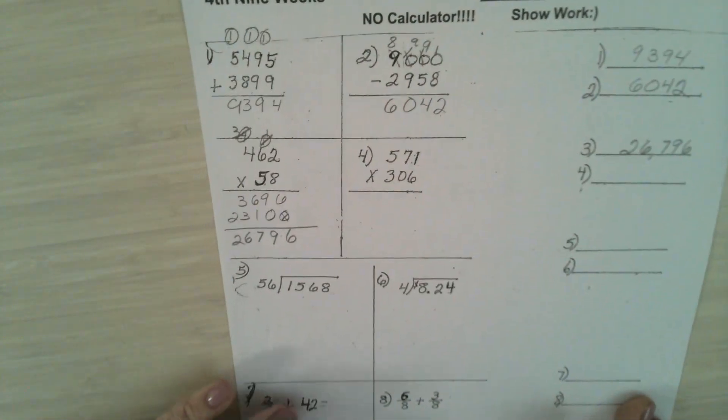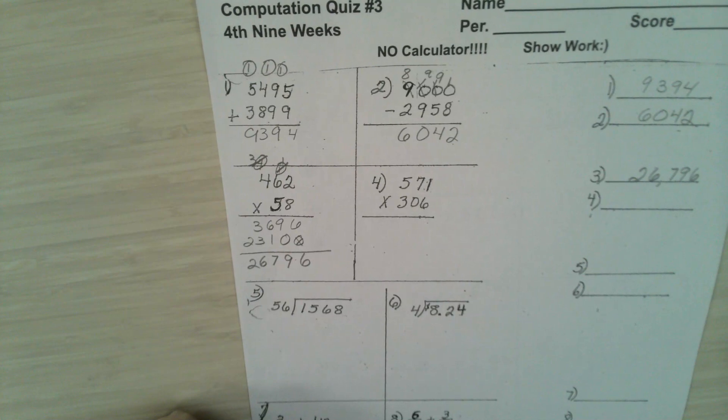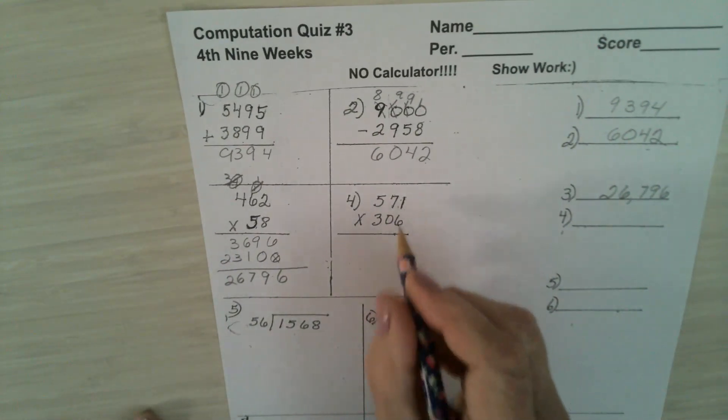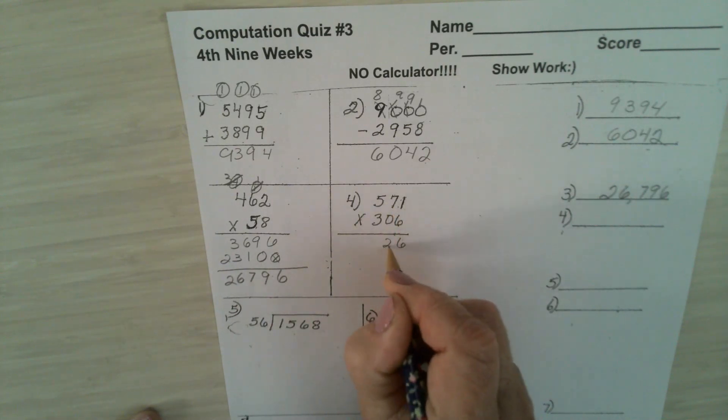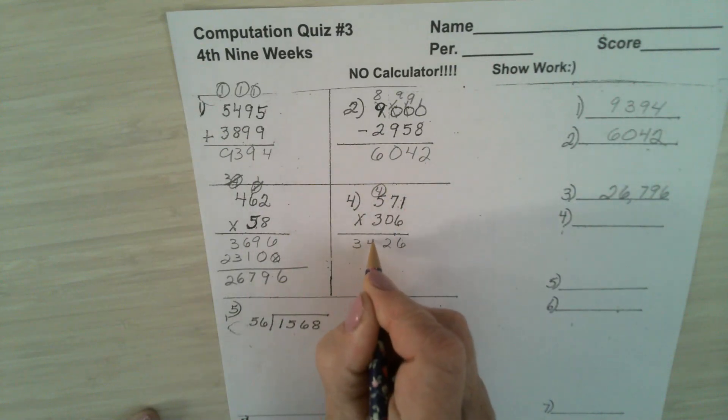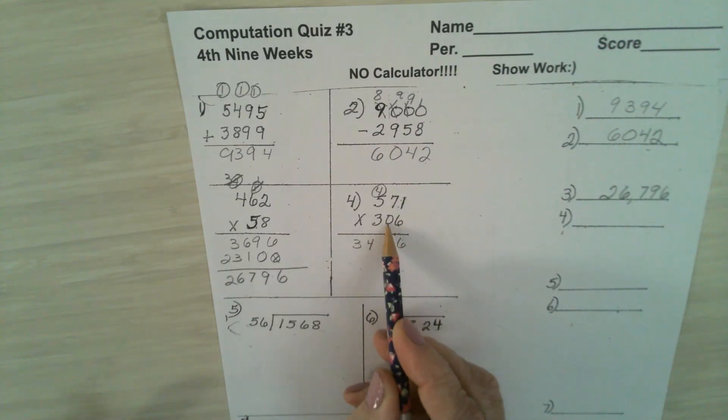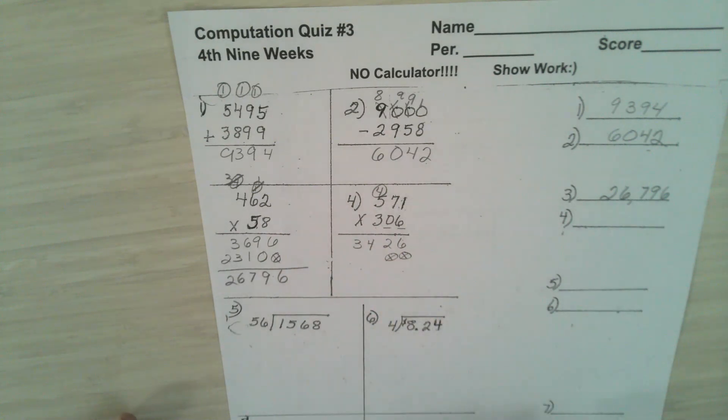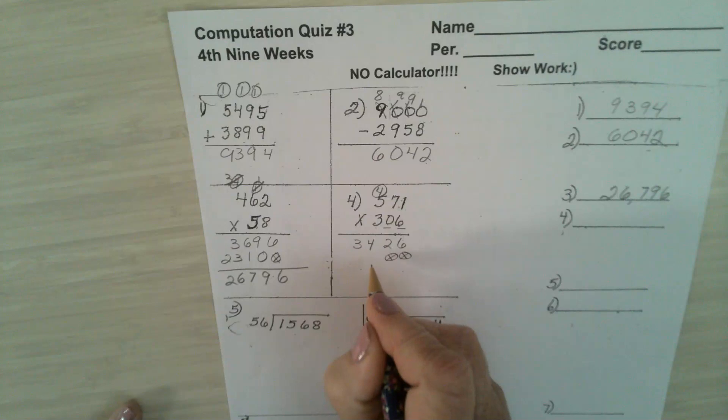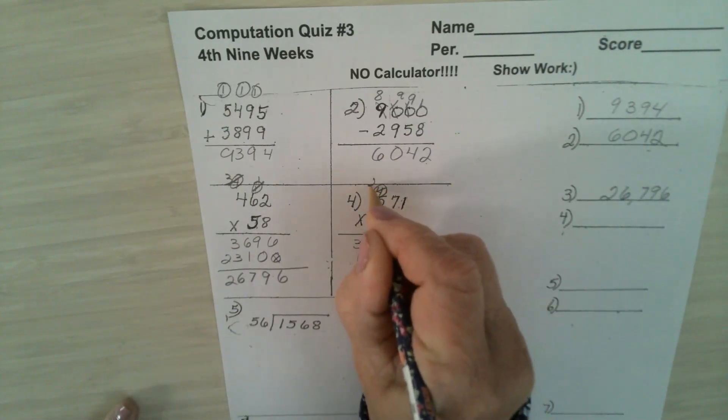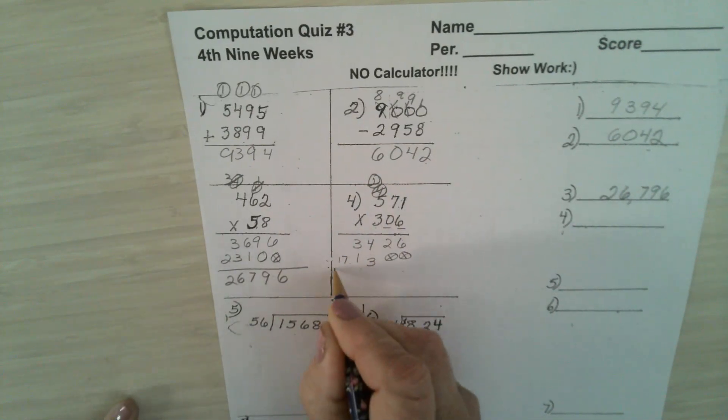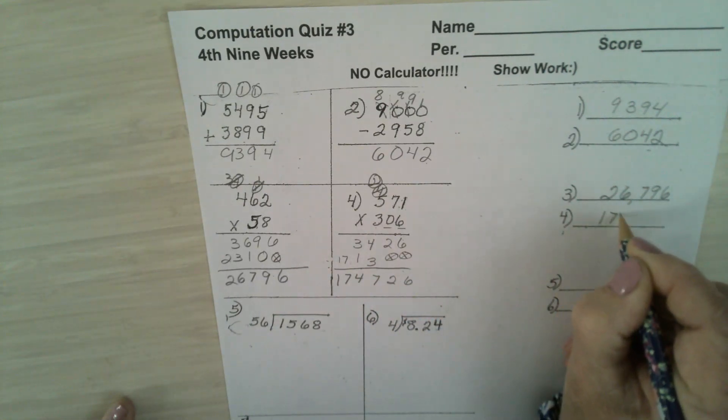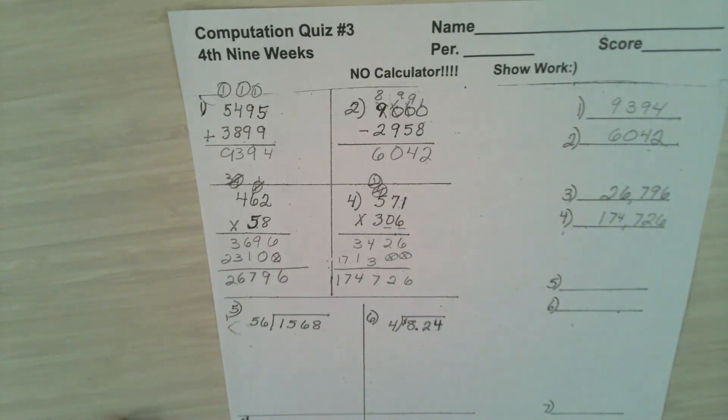In the next problem, you're multiplying 3 digits times 3 digits. Now we're ready for problem number 4. You multiply by the 6. 6 times 1 is 6, 6 times 7 is 42, put down a 2, carry a 4. 6 times 5 is 30, plus 4 is 34. You do not multiply by the 0, because everything will be 0. You multiply by the 3. There are 2 numbers behind the 3, so I will put in 2 places before I multiply by the 3. 3 times 1 is 3, 3 times 7 is 21, carry a 2, 3 times 5 is 15, plus 2 is 17. You should have 174,726 for your answer. Any questions?